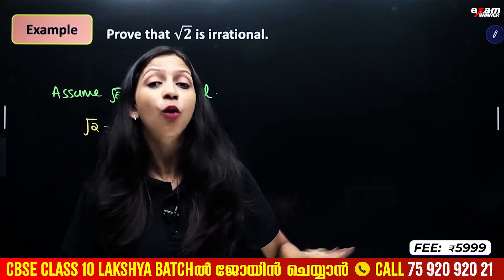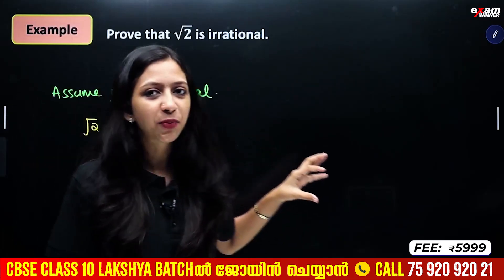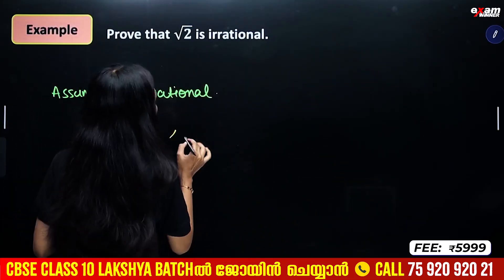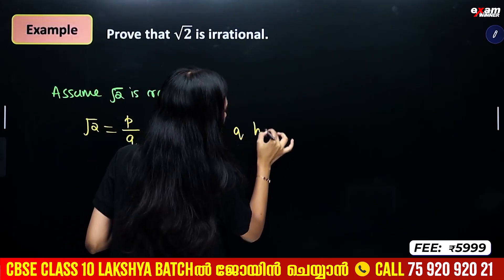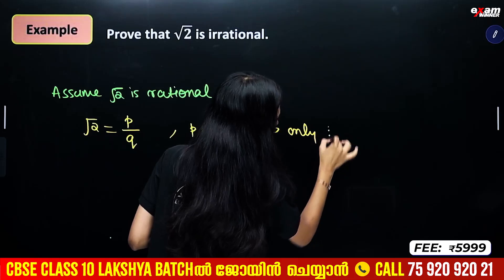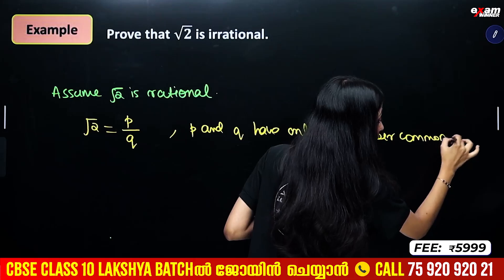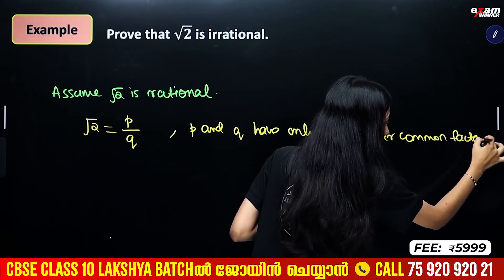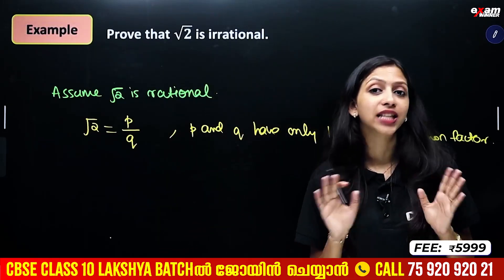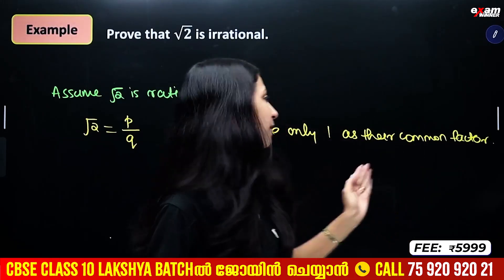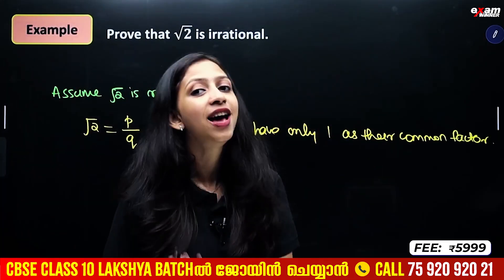One condition is that P and Q have no common factors other than 1. P and Q are not common factors — the common factors are divided out. So, P and Q have only one as their common factor.